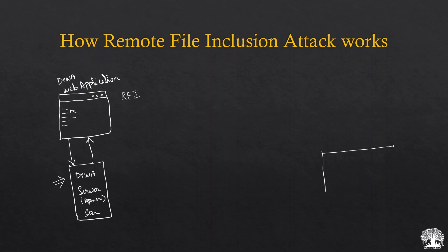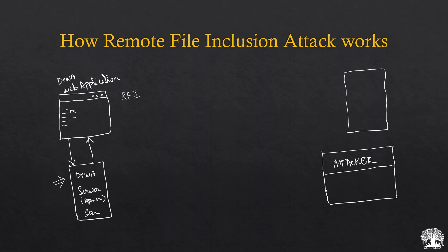What an attacker could do is — let us assume the attacker has a separate machine. What they will do is create a temporary server, which we can call the malicious server. On this malicious server, the attacker can load a script or any file of their choosing. For demonstration purposes, we will have a script here that establishes a reverse shell. When this script is loaded on any web application, that web application will create a reverse shell back to the attacker's machine.